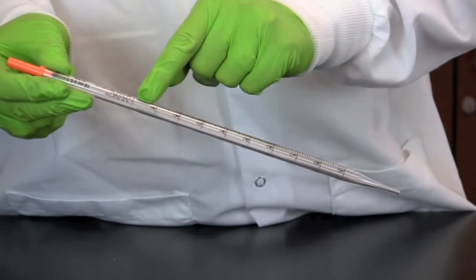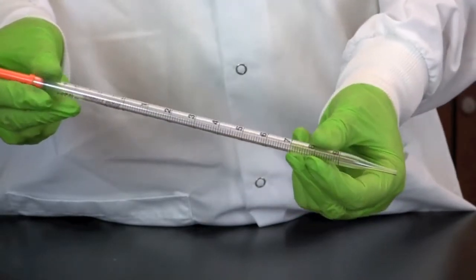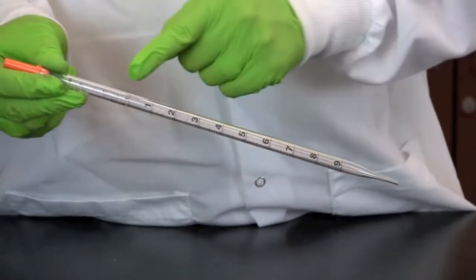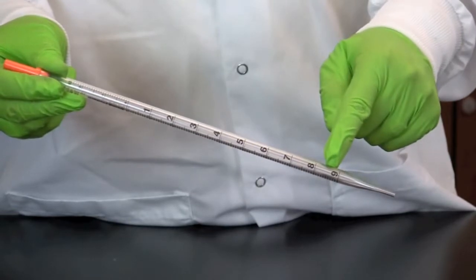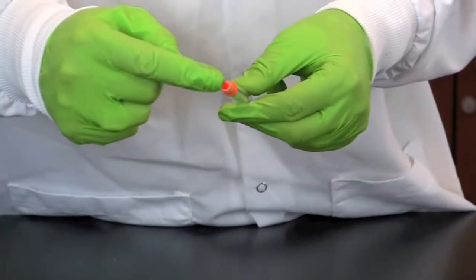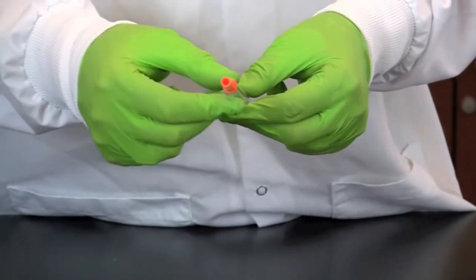Serological pipettes have two scales, one for filling and on the other side one for dispensing. They often have a cotton plug in one end to prevent contaminants from being drawn into the vacuum source.